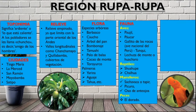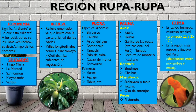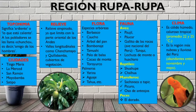Por último, el clima. ¿Cómo es el clima de la región Rupa Rupa? Tenemos un clima bastante cálido, húmedo tropical, caluroso, con temperaturas promedio entre los 22 a 25 grados centígrados. Además, esta región se conoce como la región más lluviosa, con bastante nubosidad. Es la región más lluviosa especialmente entre los meses de noviembre y mayo. Si algún día viajas a esta región, te recomiendo que no sea entre noviembre y mayo.